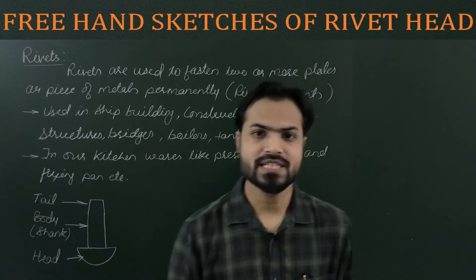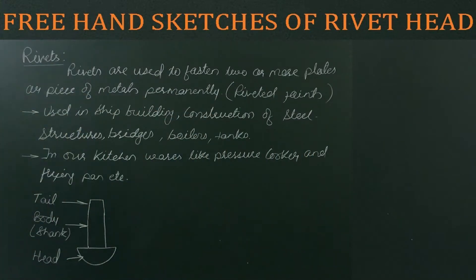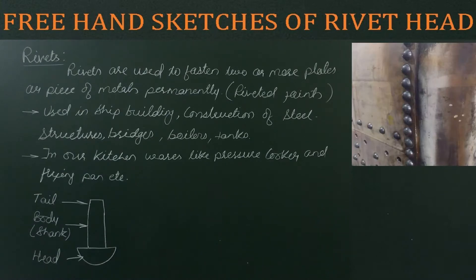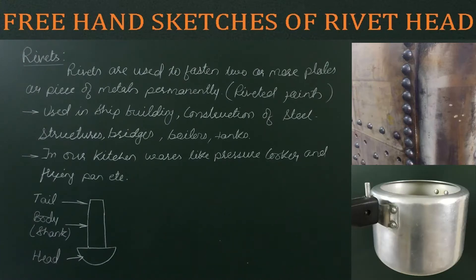First of all, let's see what rivets are. Rivets are used to fasten two or more plates or pieces of metal permanently. This type of joining process is a permanent joint. Joints made with rivets are called riveted joints. They are commonly used in ship building, construction of steel structures, bridges, boilers, tanks, etc., and in kitchenware like pressure cookers and frying pans.